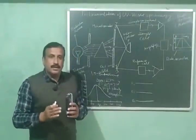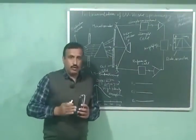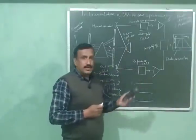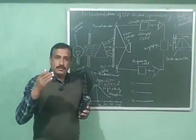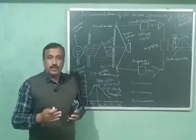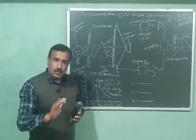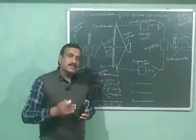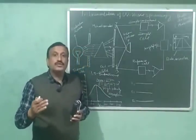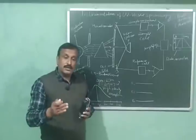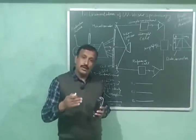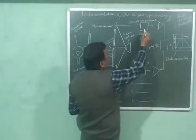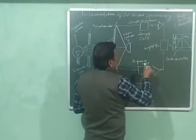The second beam is passed through the reference cell, which contains pure solvent only. The sample cell and the reference cell are made of silica or quartz, because silica or quartz do not absorb UV-visible radiations. Glass cells can be used only for visible light, because glass strongly absorbs UV radiations.